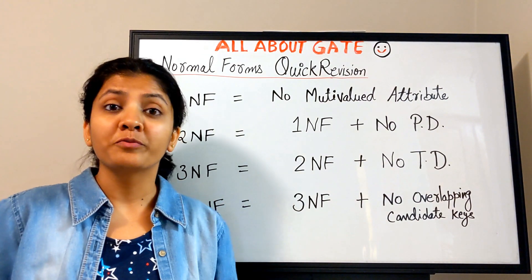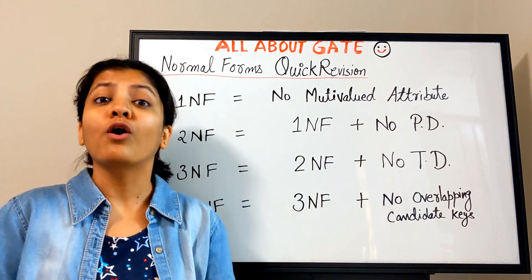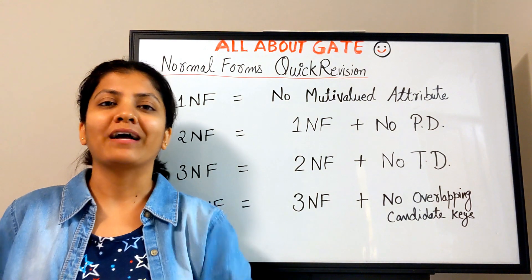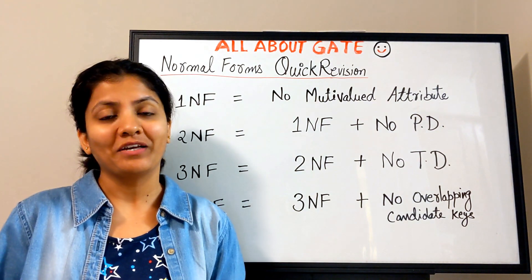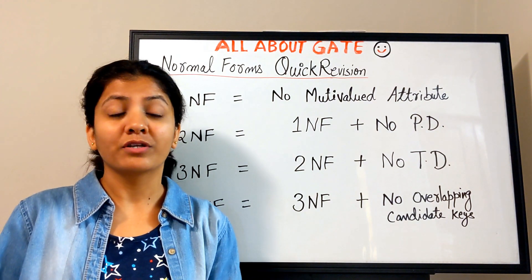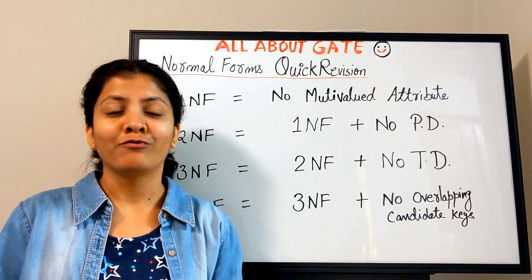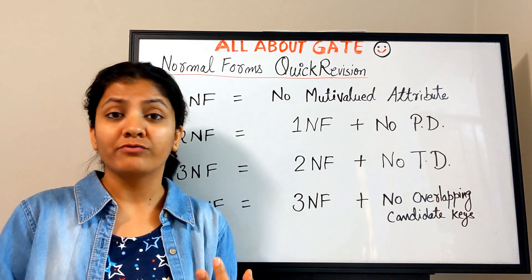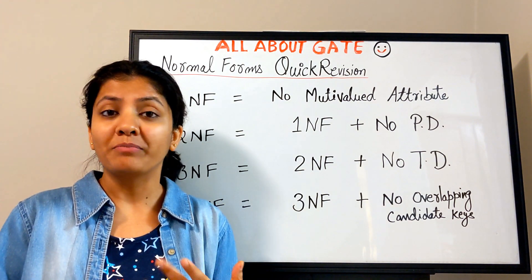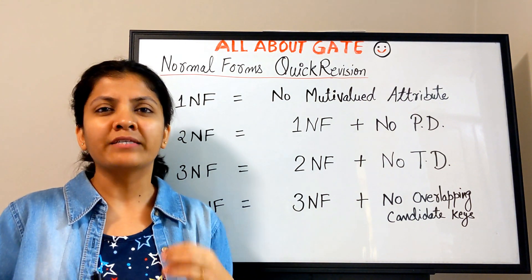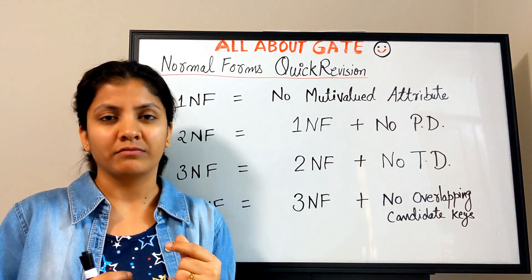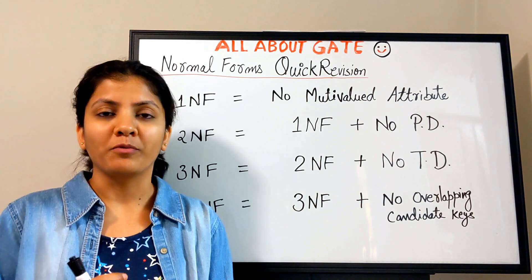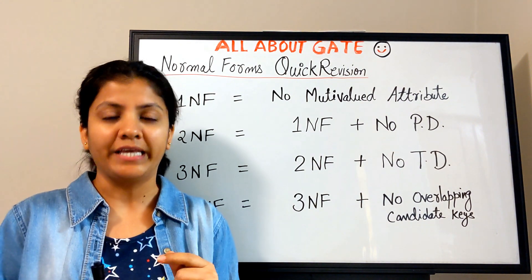Welcome to the YouTube channel where we talk all about GATE. We are studying DBMS, and in normalization we have covered all four types of normal forms: 1NF, 2NF, 3NF, and BCNF. This video is a quick revision video to help you revise all the types of normal forms quickly.